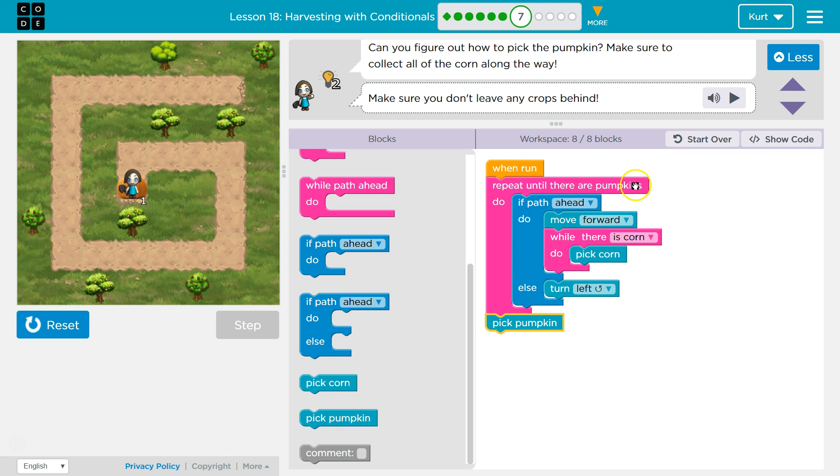And then once, repeat until there are pumpkins. Once there's a pumpkin, this loop stops. And it drops below, and it would run any code we had. Well, I'm at a pumpkin. It's kept repeating, and then I hit a pumpkin, and then I did nothing.